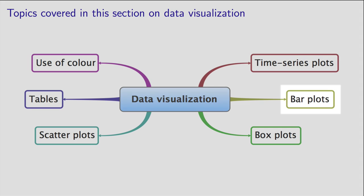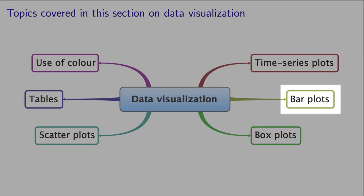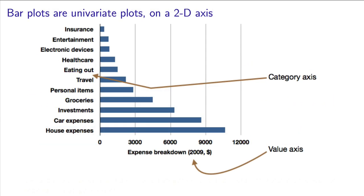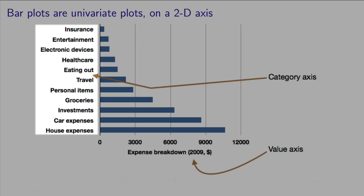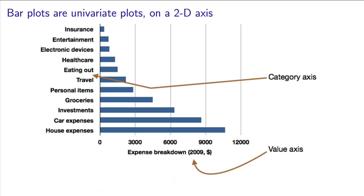In this section, we introduce the bar plot. A bar plot is a univariate plot that is shown on a two-dimensional set of axes. There is a category axis and a value axis. In this example bar plot, I've shown the household expenses on an annual basis, with each type of expense as a category, and the length of the corresponding bar giving the value.